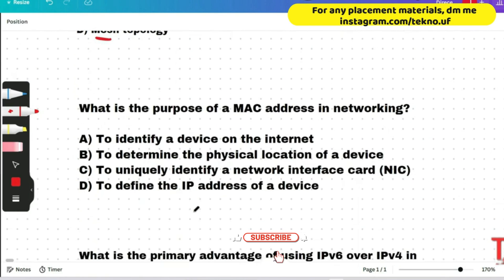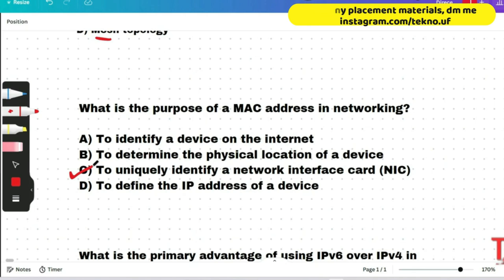The next question is: What is the purpose of a MAC address in networking? Options are: to identify a device on the internet; to determine the physical location of a device; to uniquely identify a network interface card (NIC); or to define the IP address of a device. Option C will be correct. A MAC, or media access control address, is a unique identifier assigned to a network interface card to distinguish it from other devices on the network.